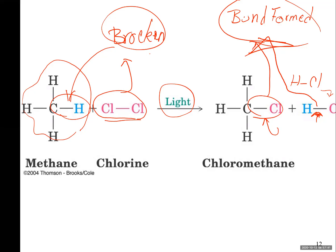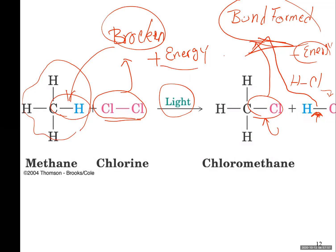Bond broken needs energy, so positive energy. Bond formed, there is a negative energy — that means energy released. Add these together and you have the balance. Then you can calculate delta H of a chemical reaction.